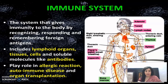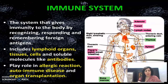The immune system works by recognizing, responding to, and remembering foreign agents. It includes the lymphoid organs, tissues, cells, and soluble molecules like antibodies. It plays a role in allergic reactions, autoimmune diseases, and organ transplantation.